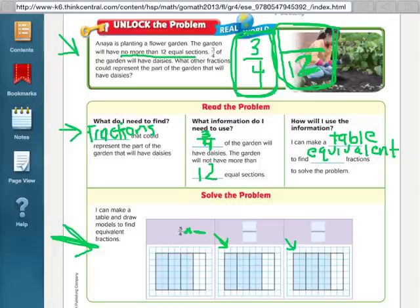So 3 fourths times 1 over 1 would still be 3 fourths. So I'm going to start with 3 fourths times 2 over 2. So I'm going to split this model into two extra sections, which means I'm multiplying my 3 fourths times 2 on the top and 2 on the bottom. So a 3 times a 2 would give me a 6, and a 4 times a 2 would give me an 8.